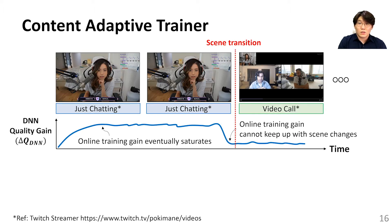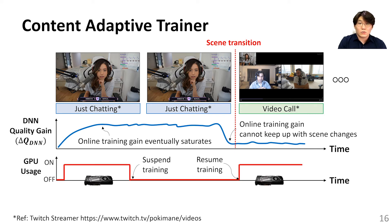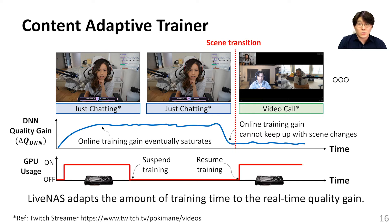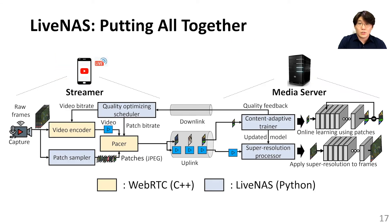The goal of the content-adapted trainer is to improve the resource efficiency of online training. Our content-adapted trainer suspends training when it detects saturation in training gain, and resumes training when it detects a scene or content change. In this way, LiveNAS is able to adapt the amount of training time to the real-time quality gain. Putting all the design components together, here is the overview of the LiveNAS system.